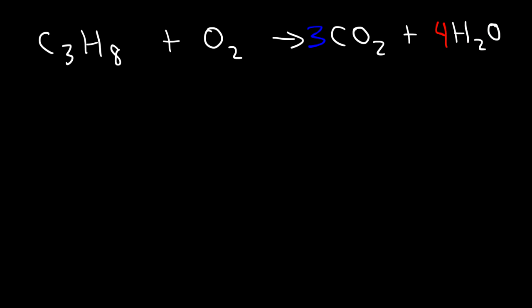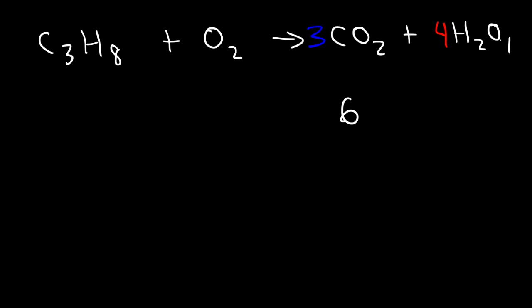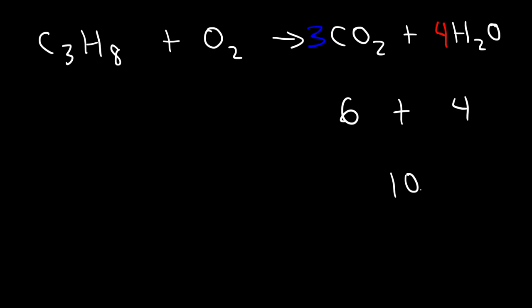The last thing to balance for combustion reactions is the oxygen atoms. On the right side, we have 6 oxygen atoms from the 3 CO₂ molecules (3 × 2 = 6) and 4 oxygen atoms from the 4 water molecules (4 × 1 = 4), for a total of 10 oxygen atoms on the right. So we divide 10 by 2, which gives 5, and put a 5 in front of O₂. Now the reaction is balanced.